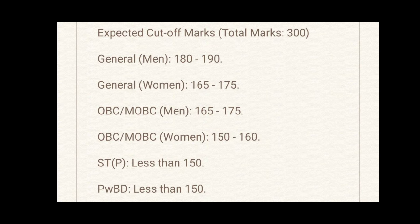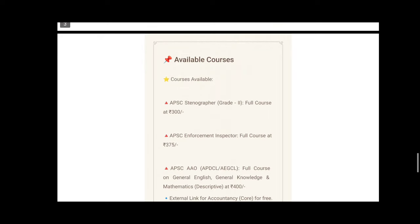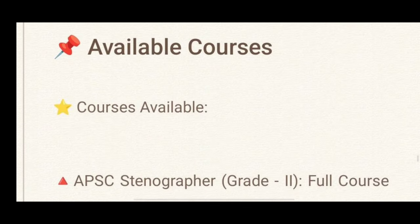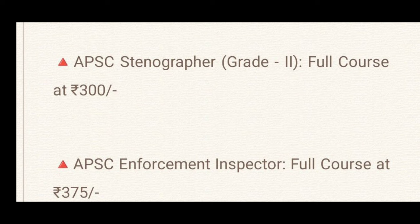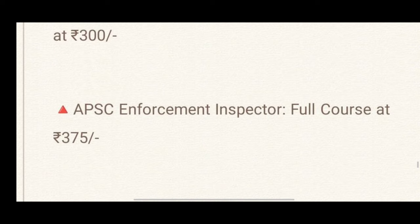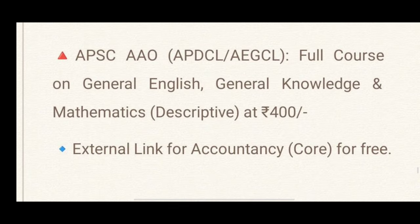I hope this video is helpful. This is an objective type written examination. The full course is available in 3 years. This is the ASAM Secretary Post. The APC Enforcement Inspector is available at 375. The APC Assistant Accounts Officer, APDCL, AGC — full course is available. General learners and mathematics descriptive paper is available at 400. If you have any questions, you can share an external link. There is no course subject for mathematics and statistics.